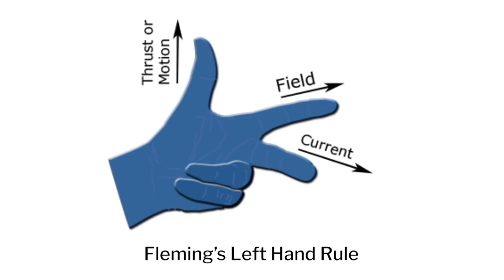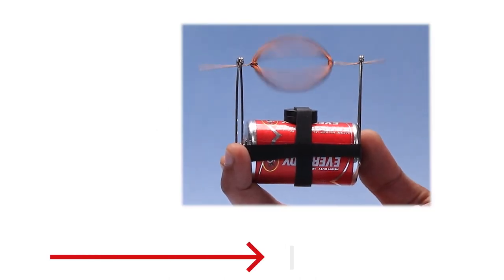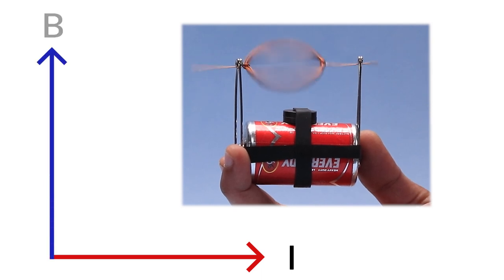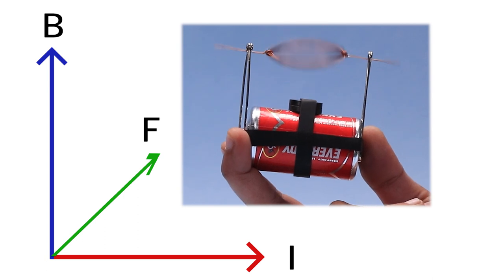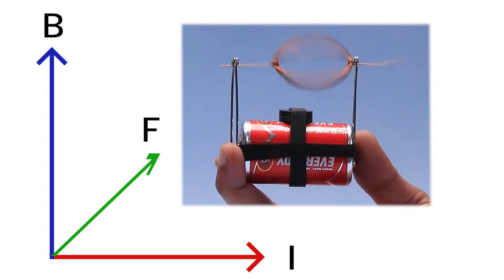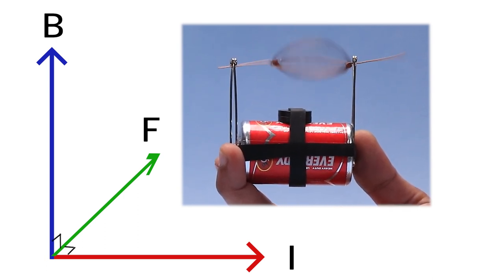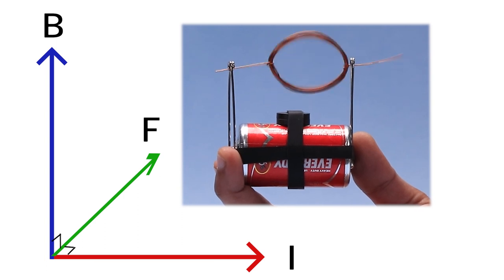To remember Fleming's left-hand rule, we take help of a very popular mnemonic: FBI — though it might seem like CID. In FBI, F stands for force, B stands for magnetic field, and I stands for current. Fleming's left-hand rule states that when a current-carrying conductor is placed in an external magnetic field, the conductor experiences a force. This force is perpendicular to the direction of the magnetic field and also perpendicular to the direction of the current.